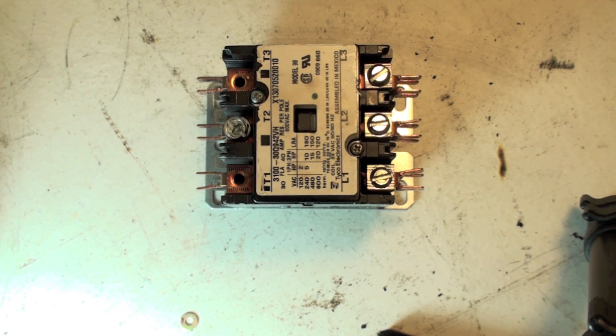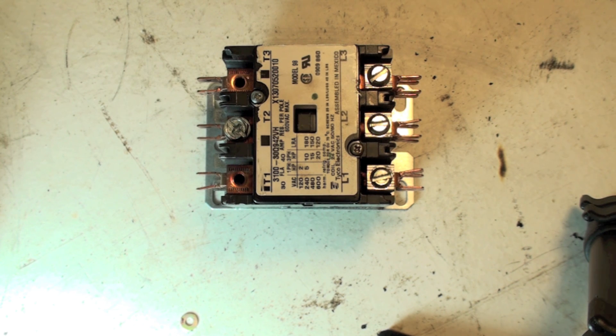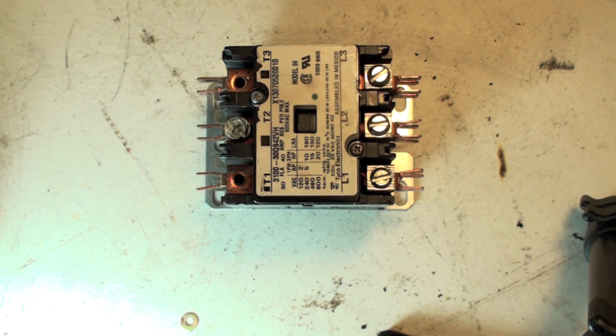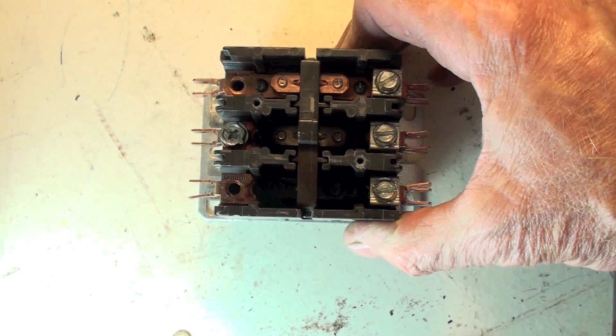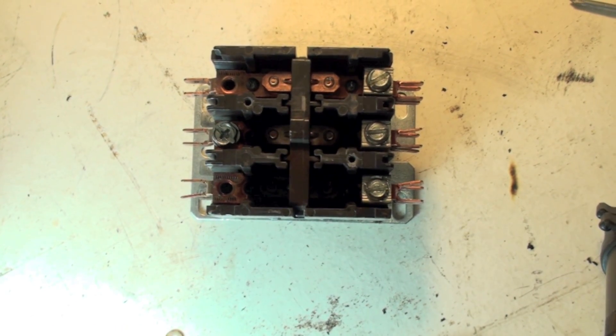Okay, here we have a pretty standard 30 amp three-phase contactor and this one has failed. I want to show you inside what's happened to it to cause the failure. Okay, here the top is loose and we're going to try to take a look at this thing inside.